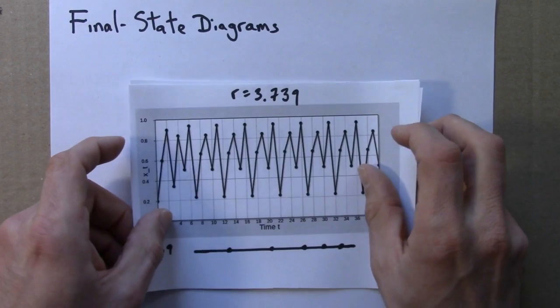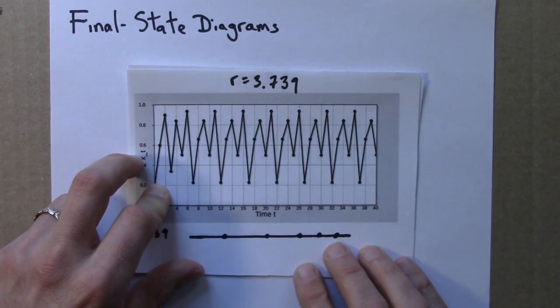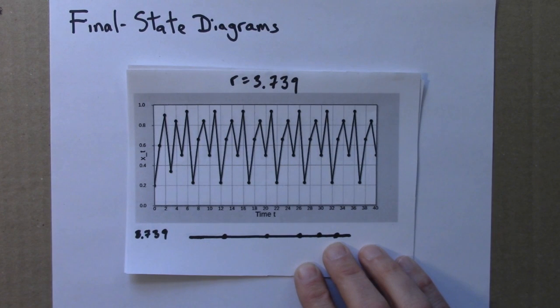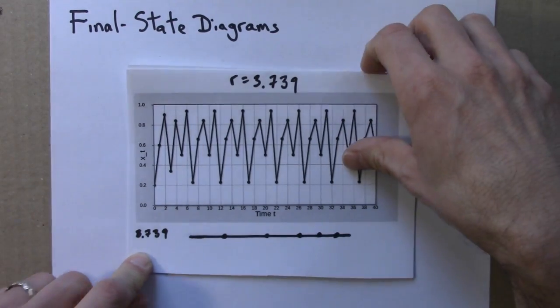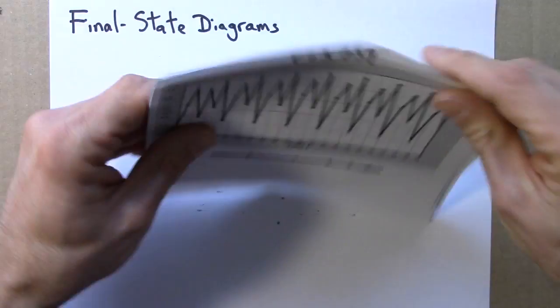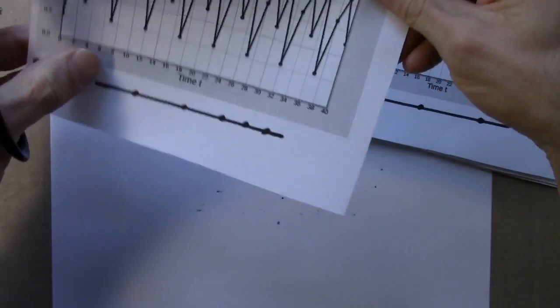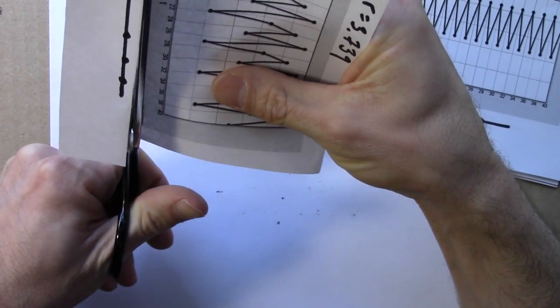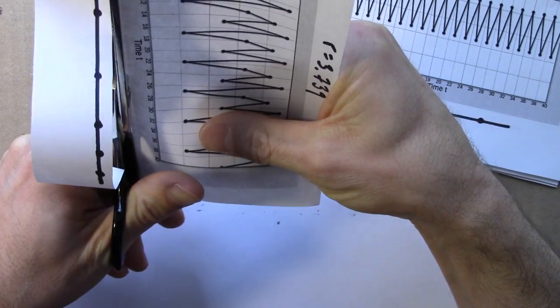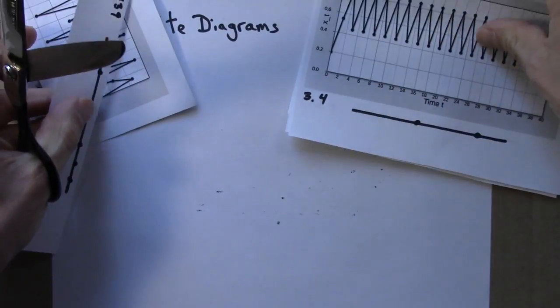So we've got our collection of finite state diagrams. And as we did with differential equations, we'll form a bifurcation diagram by gluing together a collection of finite state diagrams. So I'm going to take each of these and cut it out so I can move it around.